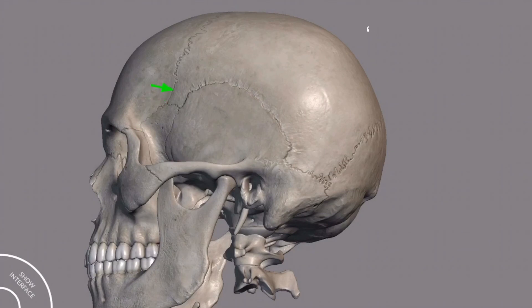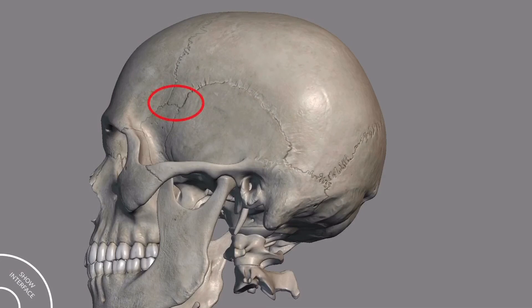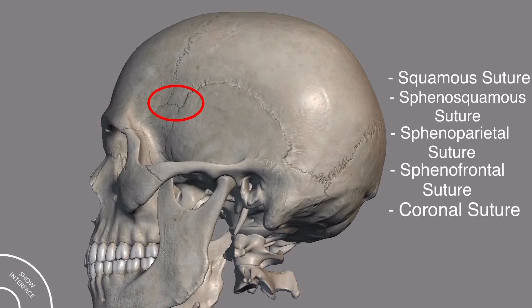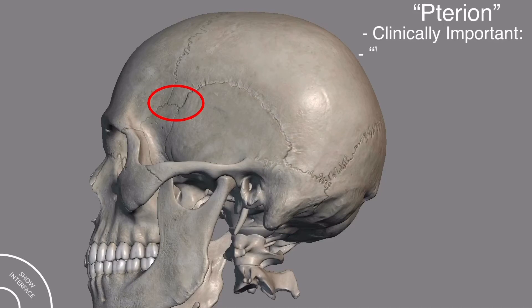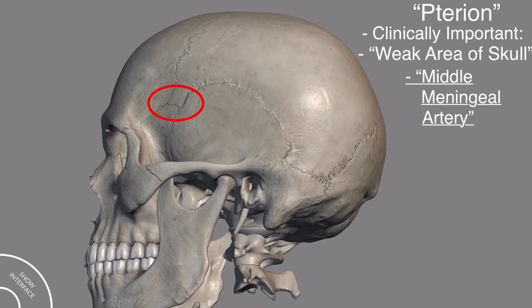The area where all these sutures meet — the sphenosquamous, sphenoparietal, sphenofrontal, and coronal sutures — is called pterion. Pterion is clinically important because it is the weak area of the skull, and behind it runs the middle meningeal artery. If someone is struck here, there is a greater chance that the middle meningeal artery will be damaged, leading to an extradural hematoma.